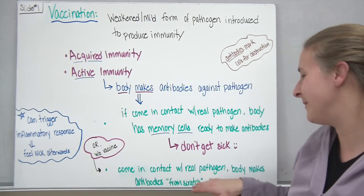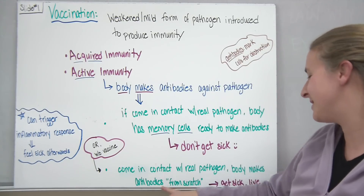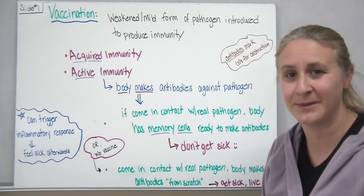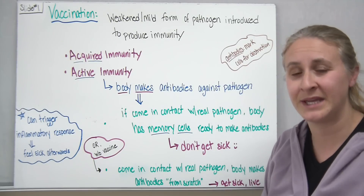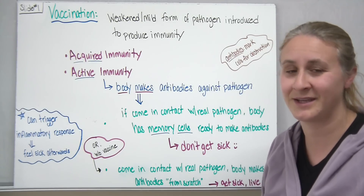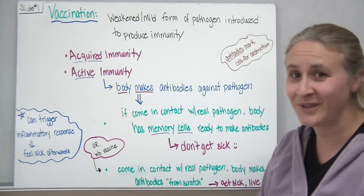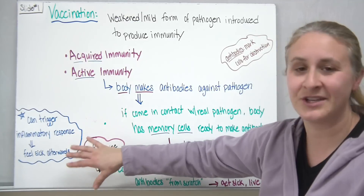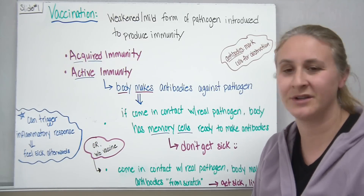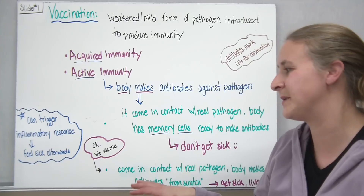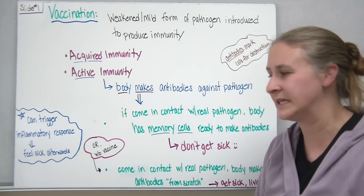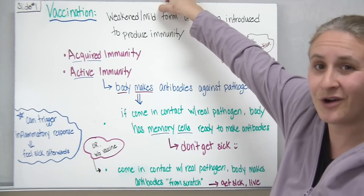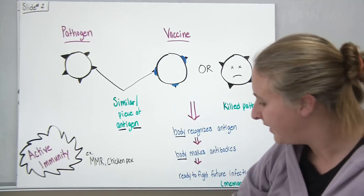If you have no vaccine when you come in contact with a real pathogen, your body will have to make antibodies from scratch — unfortunately you'll get sick the first time, but then your body will have made antibodies against it for next time. When you get a vaccination, it can trigger what's called an inflammatory response, which sometimes causes swelling, pain, redness, and heat, making you feel a little sick afterward because your body is trying to kill off the introduced pathogen.